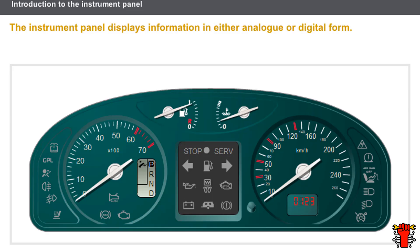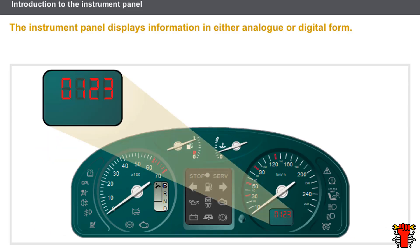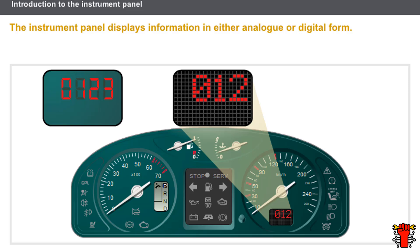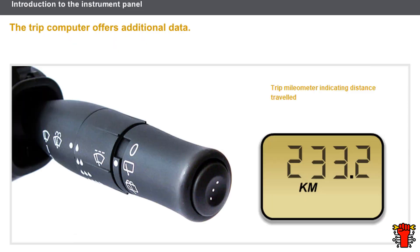The Instrument Panel displays information in either analogue or digital form. There are two types of digital display: Liquid Crystal Display or LCD, and Vacuum Fluorescent Display or VFD. VFD is more flexible than LCD in that it can display icons and characters. Some models are equipped with trip computers offering additional information. The display is controlled by a selection button located on the wiper stalk, and the available parameters are displayed by pressing the button repeatedly.